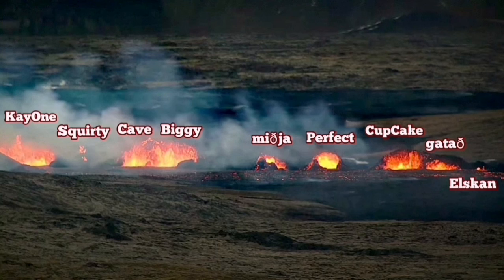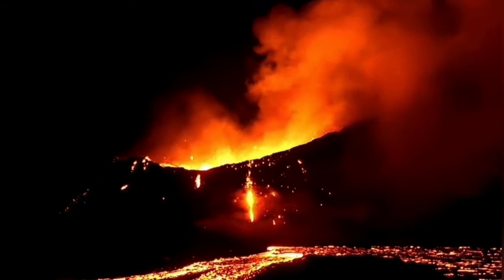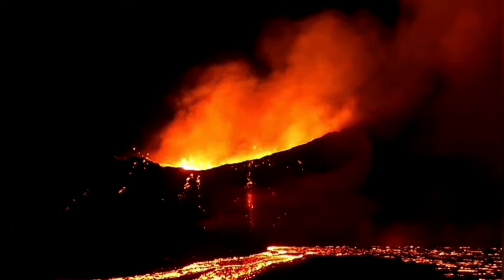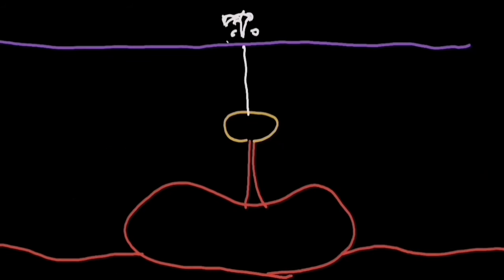On the Sundhnúkur, nine vents formed in this new eruption, which I have named all of them. The one that survived, as I've called it K1, has lasted and is the only surviving one, providing a lot of lava through the lava stream and building practically a shield around it.